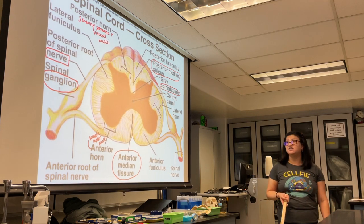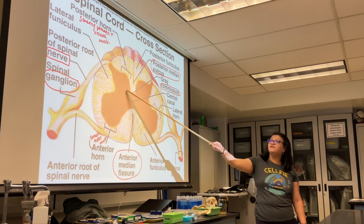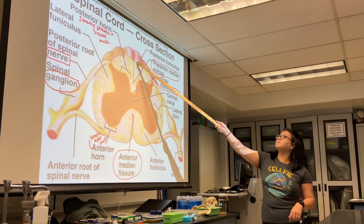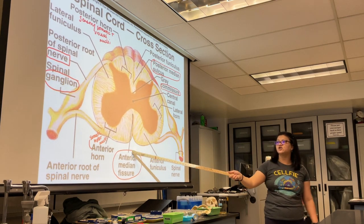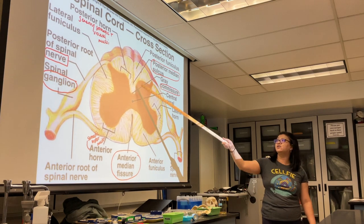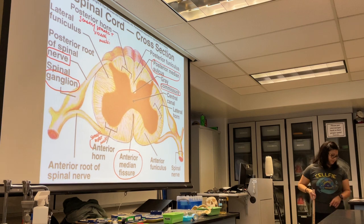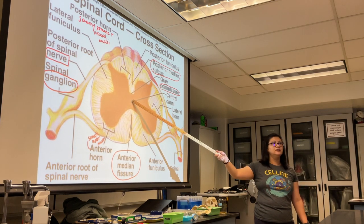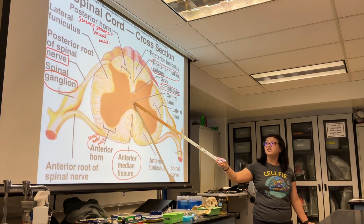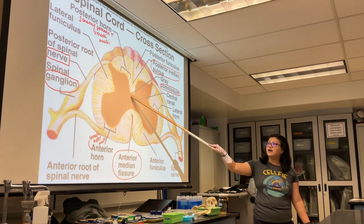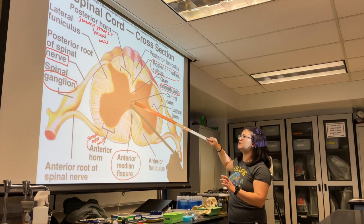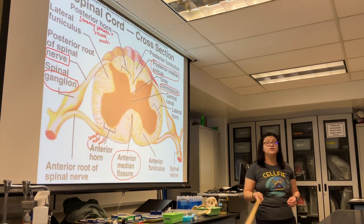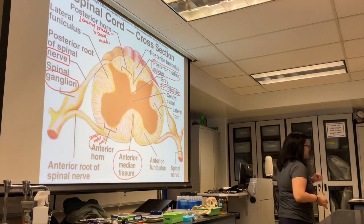The central canal of the spinal cord is where cerebrospinal fluid flows through. On either side of the central canal, you have lines of gray matter called gray commissures — a commissure being a connection — which allows the left and right sides of your spinal cord to communicate with one another.